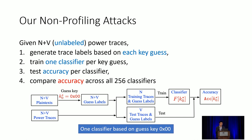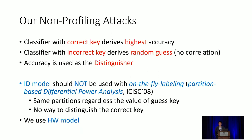We leverage accuracy as the distinguisher. The assumption is that if the classifier was trained with the correct key guess, it should have the highest accuracy. On the other hand, if a classifier was trained with an incorrect key guess, the accuracy is similar to random guessing — there is no correlation between power consumption and the Hamming weight of the intermediate results.